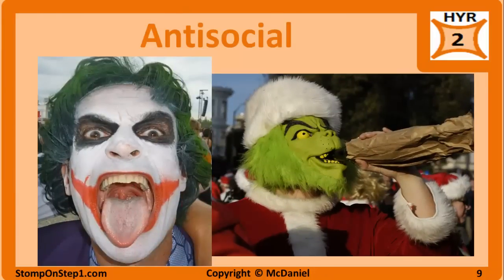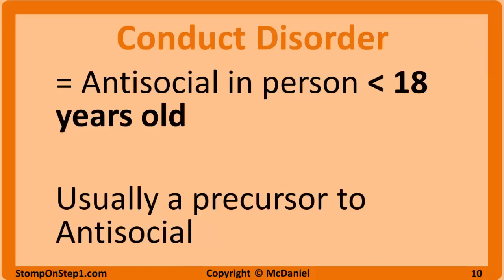Examples of antisocial personality disorder are serial killers, the Joker, and the Grinch. Individuals who have the symptoms of antisocial personality disorder but are under the age of 18 are classified as having conduct disorder, which is a precursor that usually progresses to antisocial personality once they turn 18.